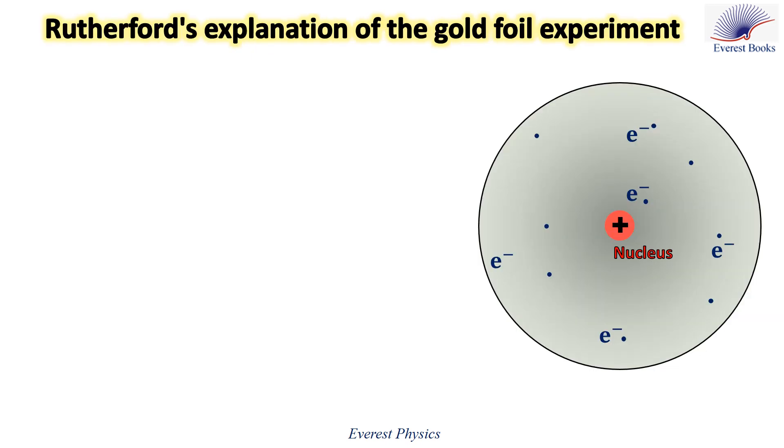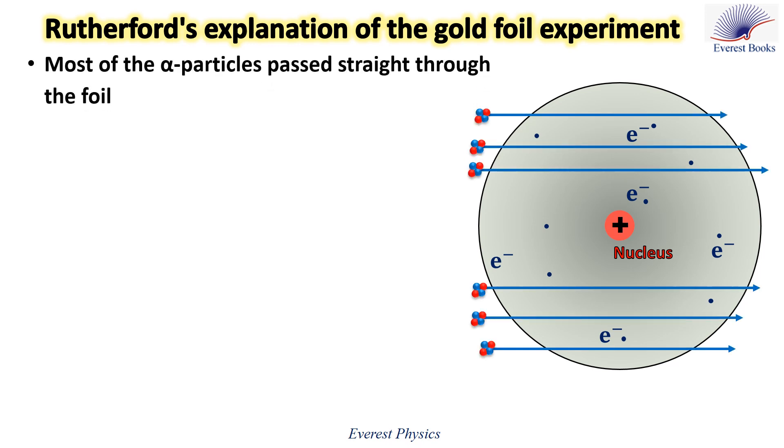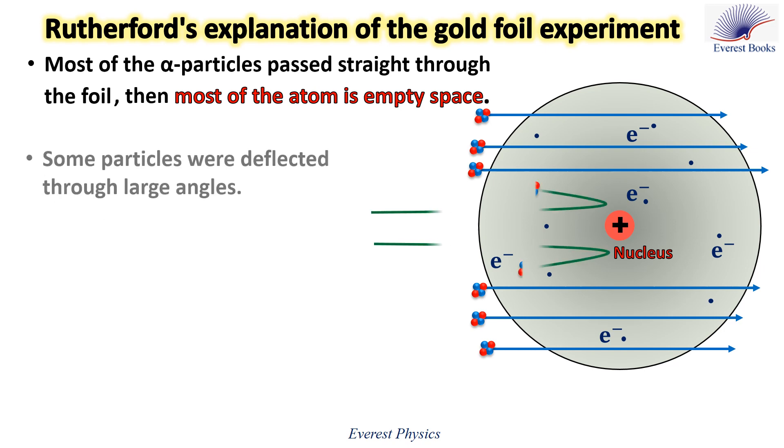How did Rutherford explain the results of the gold foil experiment? This figure represents one atom of gold. In the experiment, most of the alpha particles passed straight through the foil, like the ones whose paths are represented by blue arrows. Rutherford concluded that most of the atom is empty space.